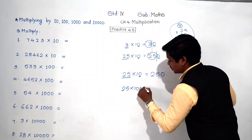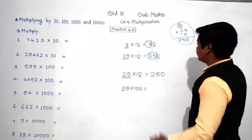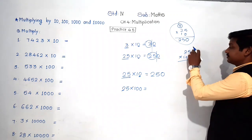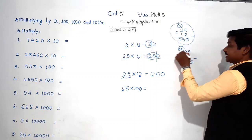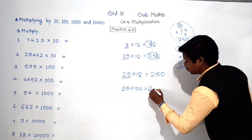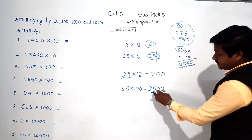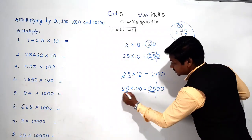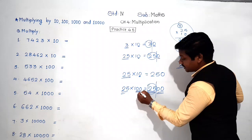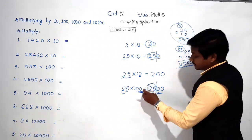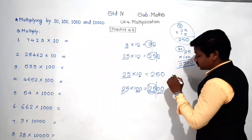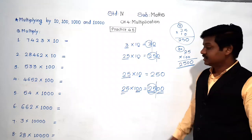25 into 100 — the table of 100 is easy: hundred ones are hundred, hundred twos are two hundred, hundred fives are five hundred. So the answer is 2500. Now see: divide the answer into two parts — 25 is the first number, and the two zeros come from 100. When multiplying by 100, write the number as it is and add two zeros at the end. That's it.